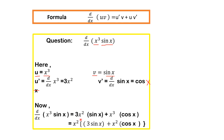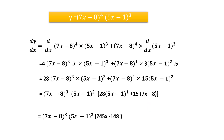So we get 3x² · sin x + x³ · cos x. Now in this expression we can take x² as common. For the first term you are left with 3 sin x, and for the second term, since x² has been taken out, you are left with x · cos x. So the final answer is x²(3 sin x + x cos x). This is how we apply the product rule.